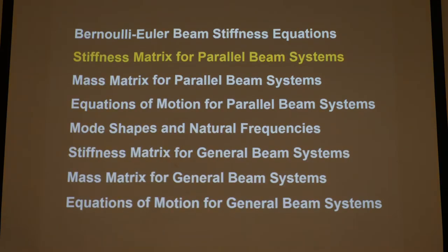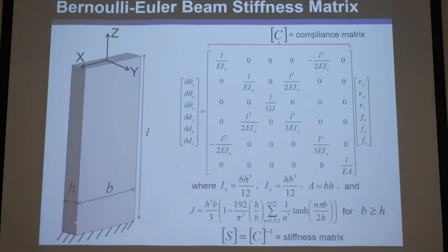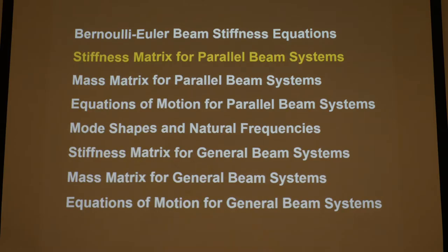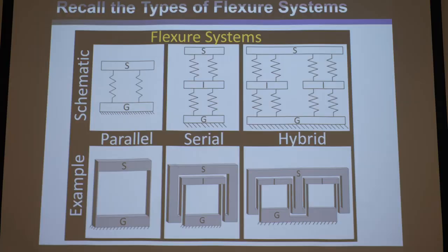Now let's look at how to construct a stiffness matrix for just a single rectangular prism beam that's fairly long, of any geometry L, H, and B. But let's also see how to construct a stiffness matrix for an entire parallel system of flexures — for any general parallel system.